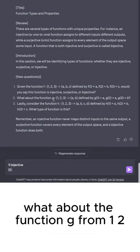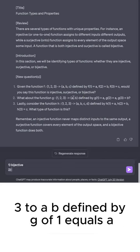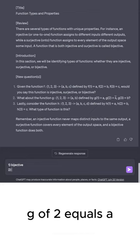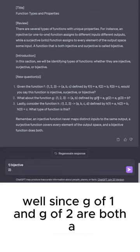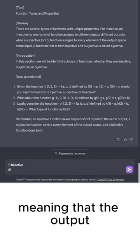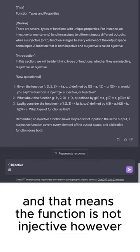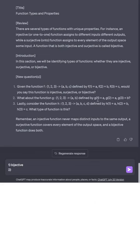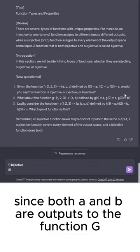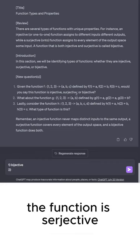What about the function g from {1, 2, 3} to {a, b}, defined by g(1) = a, g(2) = a, g(3) = b? Well, since g(1) and g(2) are both a, meaning that the output a is repeated for two different inputs, then that means the function is not injective. However, since both a and b are outputs to the function g, the function is surjective.